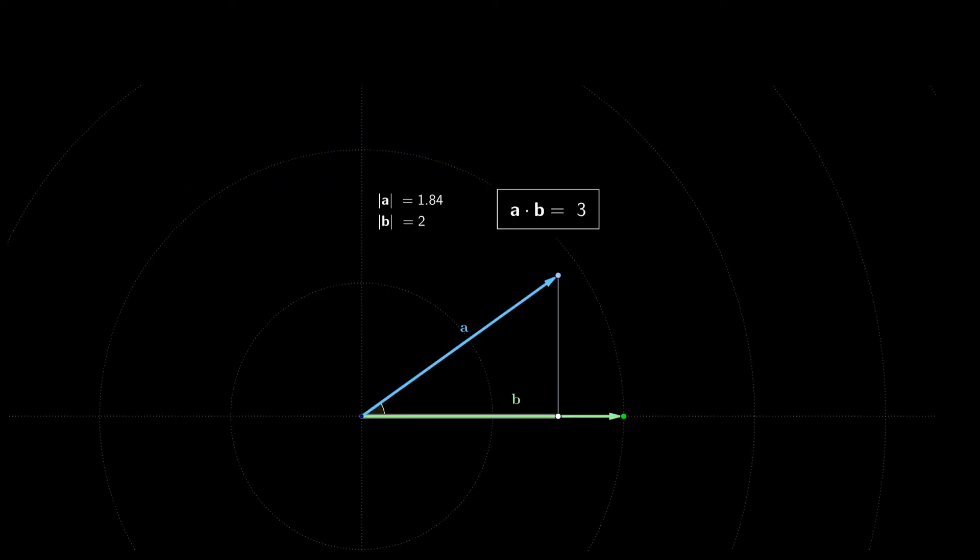Let's see how we can interpret the dot product geometrically. Here we have two vectors a and b. We are seeing the magnitude of both vectors and we are seeing the dot product between them. The dot product can be interpreted as the magnitude of vector b multiplied by the projection of vector a onto vector b, which would be this distance here. Therefore the dot product is 2 times 1.5, which is 3.